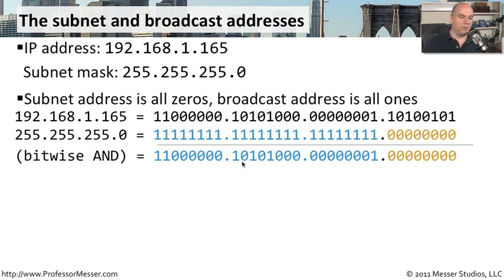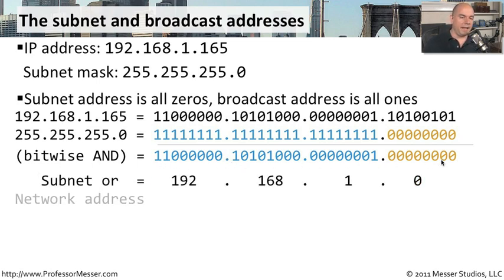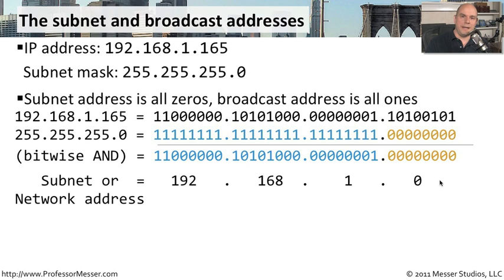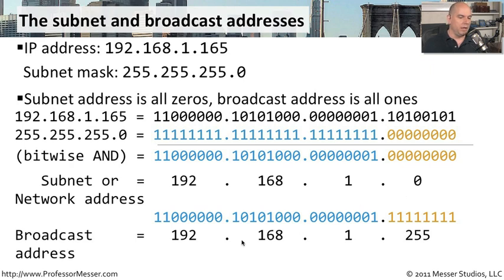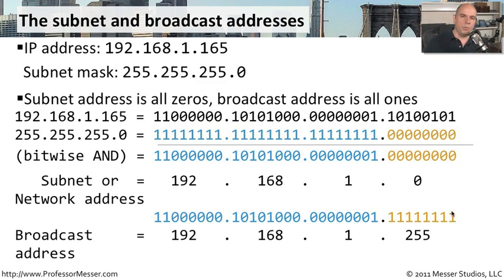So the only time there should be a one left over is when both the IP address and the subnet mask happen to be a one. If we calculate that out and take the resulting number, performing our binary-to-decimal conversion, we get 192.168.1.0 — that is our subnet address or network address. If we then take the host portion where there were zeros and change all those zeros to ones and perform the same binary-to-decimal conversion, we get the broadcast address, which is 192.168.1.255.